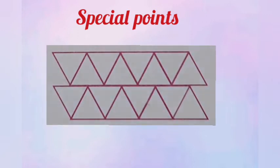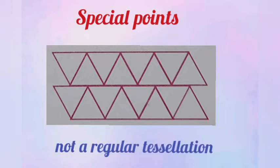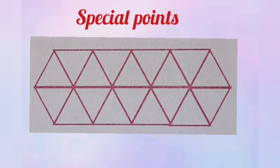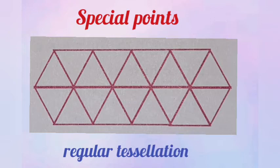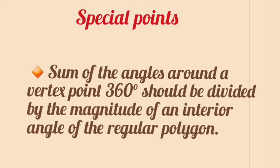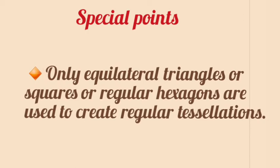If we consider this figure, the vertex point of one shape lies on the side of another shape, so this cannot be regarded as a regular tessellation. In this figure, all the vertices of each shape lie at a certain point, so this is a regular tessellation. The sum of the angles around the vertex point — 360 degrees — should be divisible by the magnitude of an interior angle of the regular polygon.